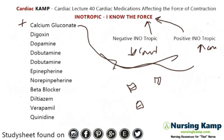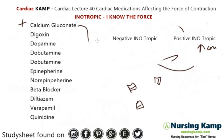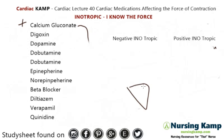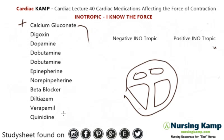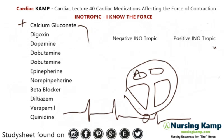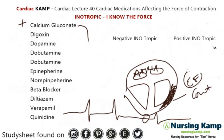The next one is digoxin. Digoxin is interesting in the sense that it's generally given for a patient who has a poor ejection fraction. When patients have AFib and they don't have good atrial kick — so nothing's happening in the atria — or they had a serious MI and they have major tissue damage, the big problem is that there's no contraction, so the ejection fraction is really down.